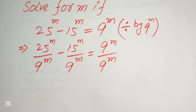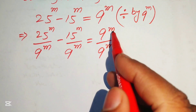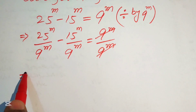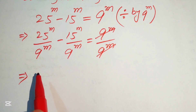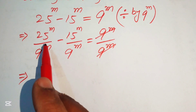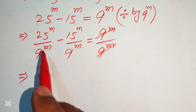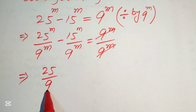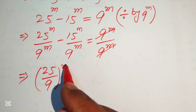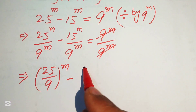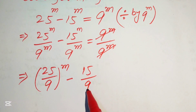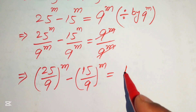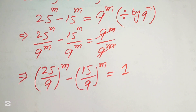The 9^m on the right cancels out. Since the exponents of both terms on the left are the same, we write this as (25/9)^m minus (15/9)^m equals 1.